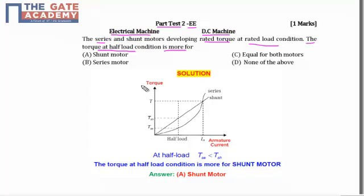Now let us analyze the torque versus armature current characteristics of series and shunt motors. At rated load conditions, the operating point is as shown here.